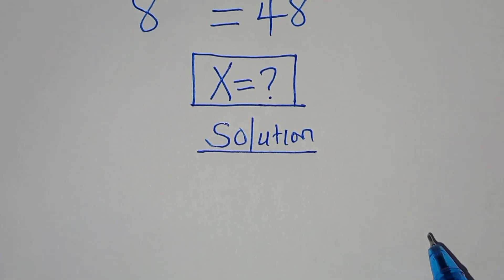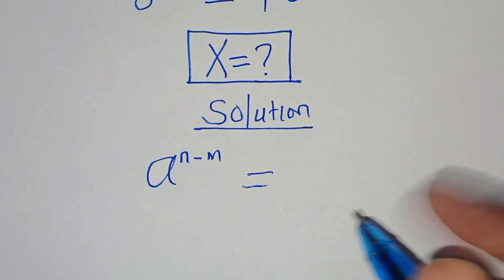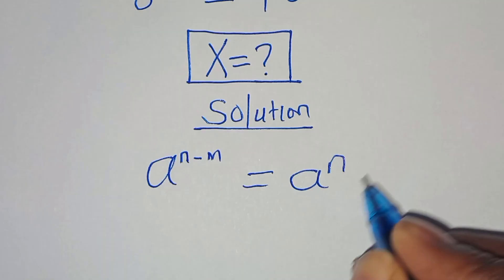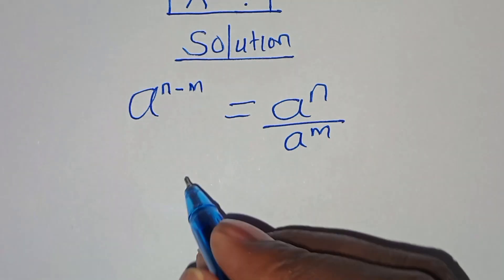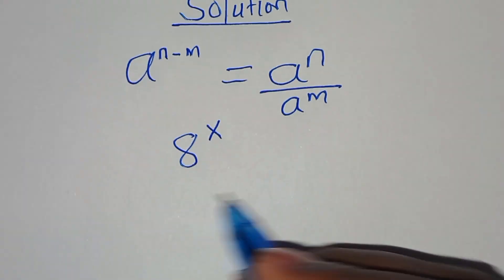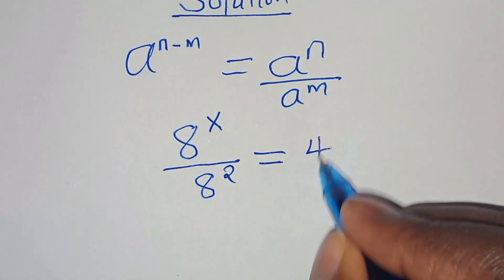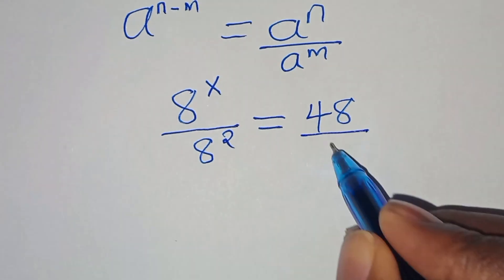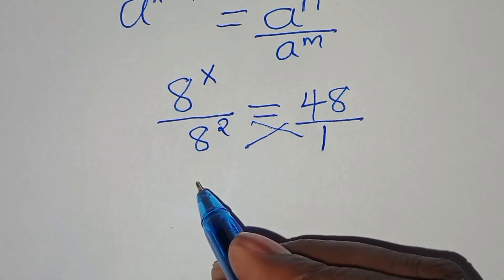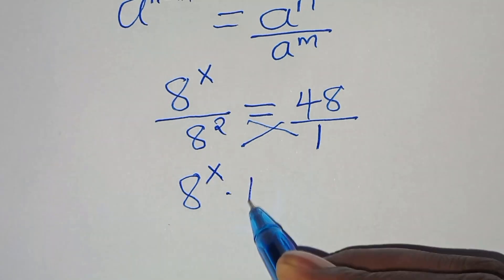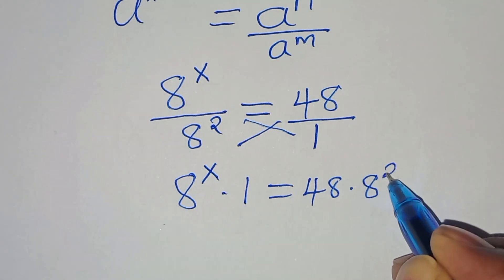This exponential equation is of the form a to the power of n minus m, which we can express as a to the power of n divided by a to the power of m. Applying this exponential property, we have 8 to the power of x divided by 8 to the power of 2, equal to 48. Since 48 is a whole number, this is over 1. Cross multiplying, we get 8 to the power of x times 1 equals 48 multiplied by 8 to the power of 2.